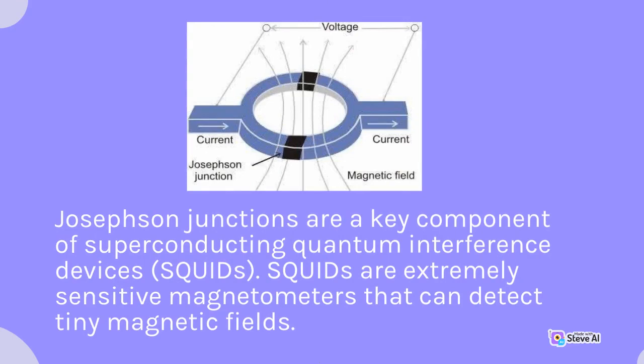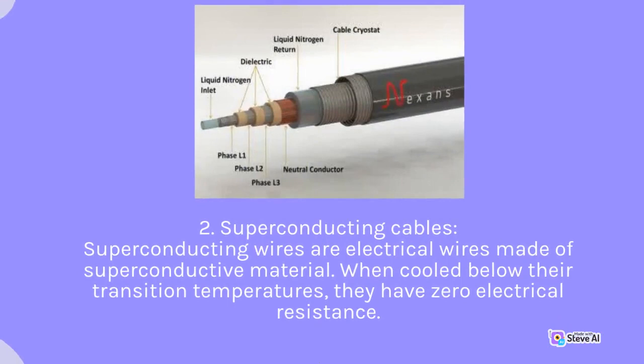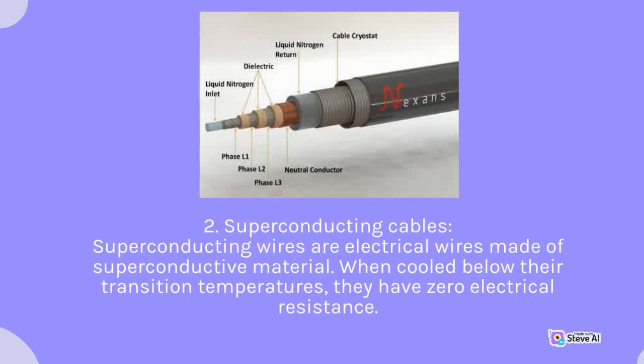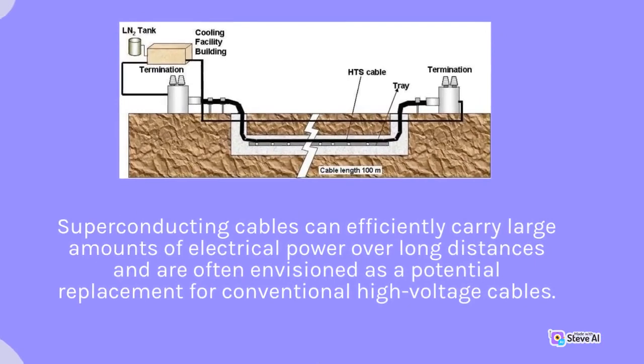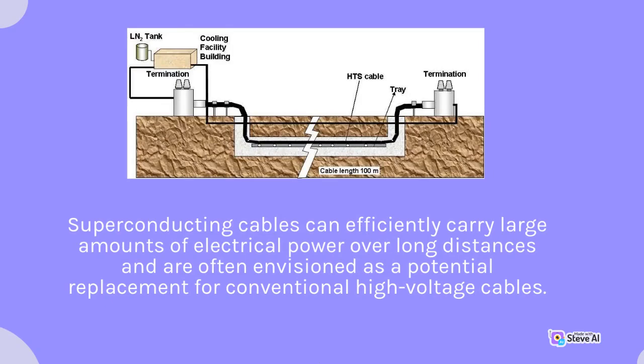Superconducting cables: superconducting wires are electrical wires made of superconductive material. When cooled below their transition temperatures, they have zero power loss. Superconducting cables can efficiently carry large amounts of electrical power over long distances and are often envisioned as a potential replacement for conventional high-voltage cables.